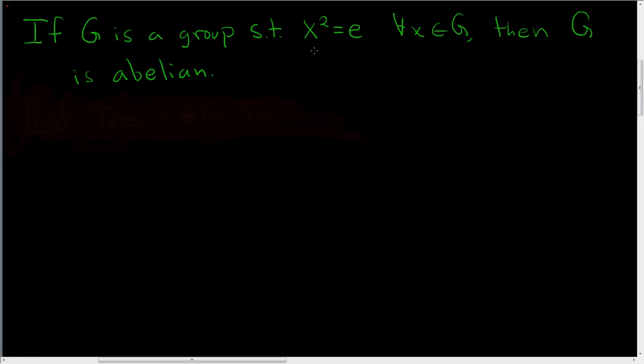If G is a group such that x squared equals e for all x in G, then G is abelian. Let's prove this. Proof.